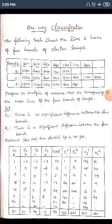We identify this as a one-way classification problem. First, we state the hypothesis. H₀: there is no significant difference between the four brands of lamp. H₁: there is a significant difference between the four brands of lamp.